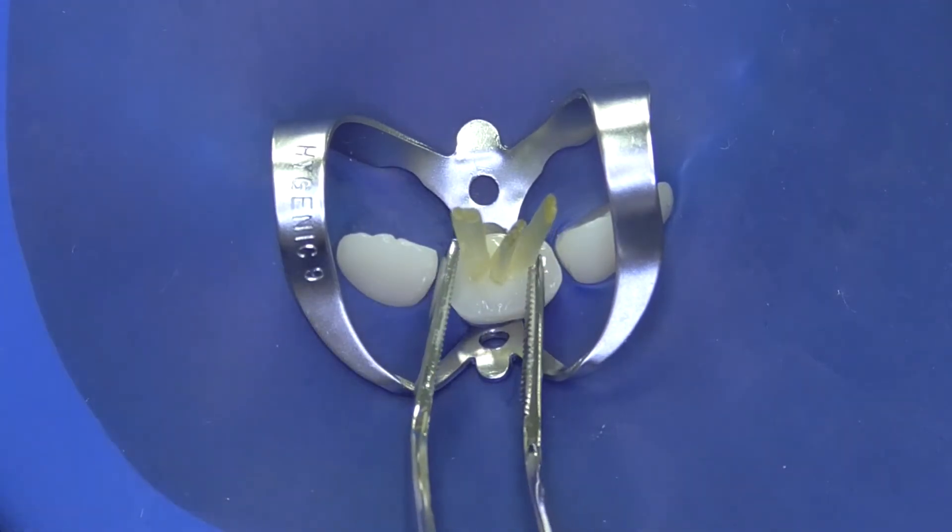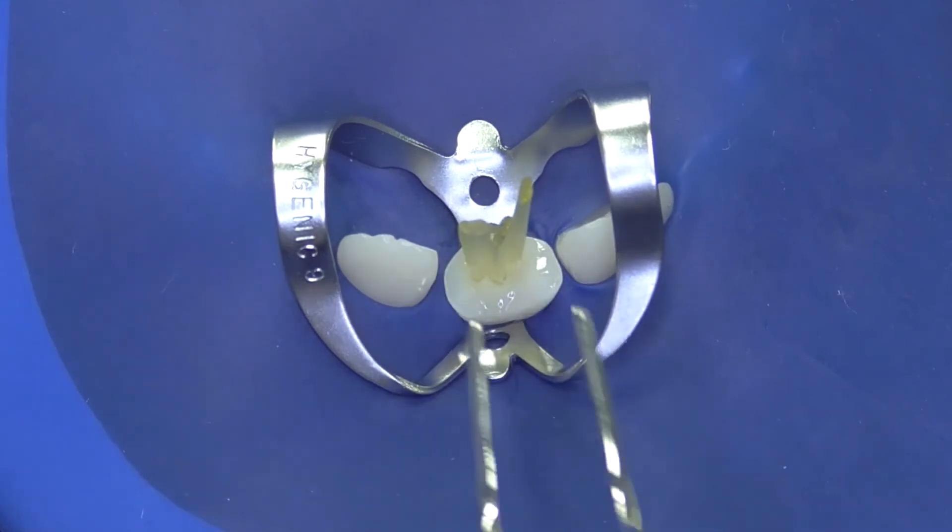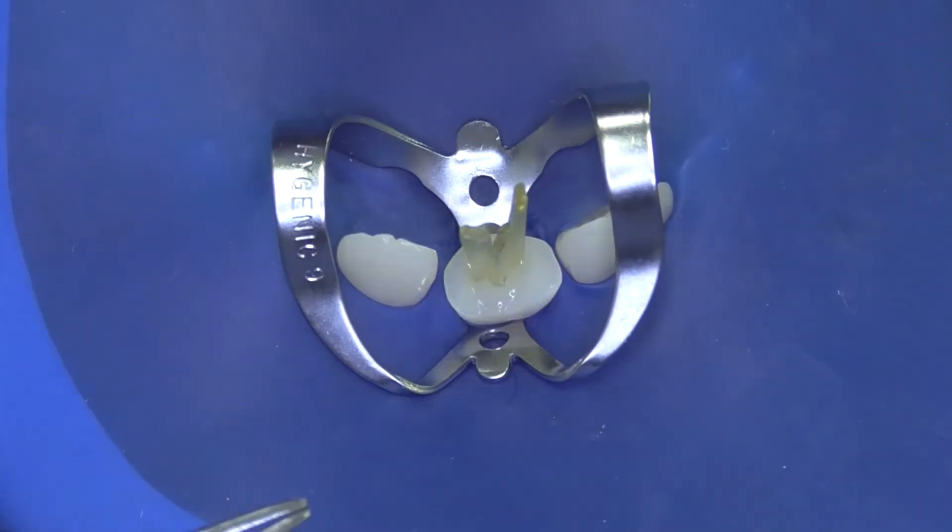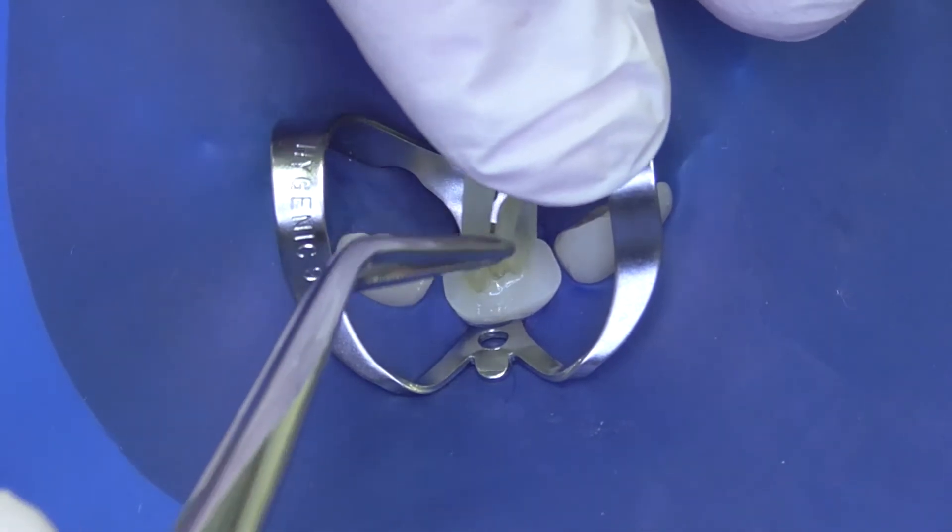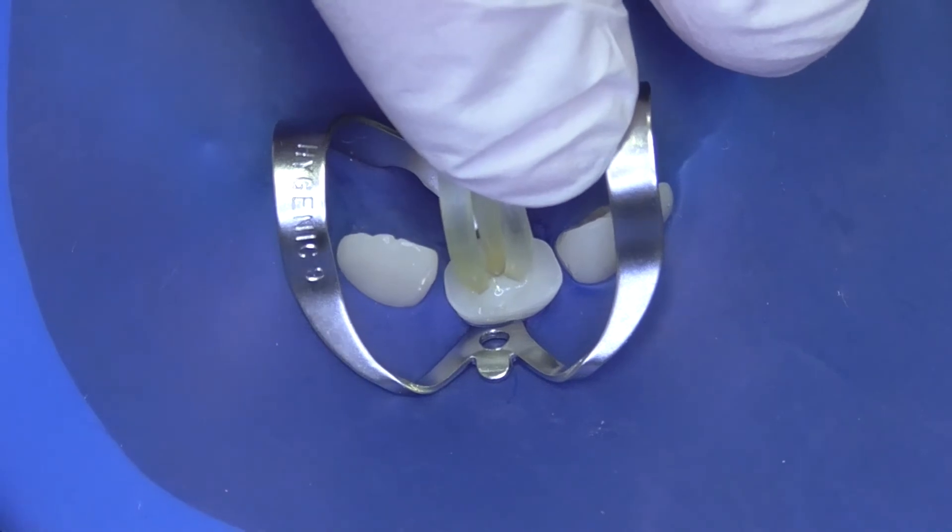Angulation can be made like we are doing it here, and then the initial curing of the cement and the post will be made by our curing device.